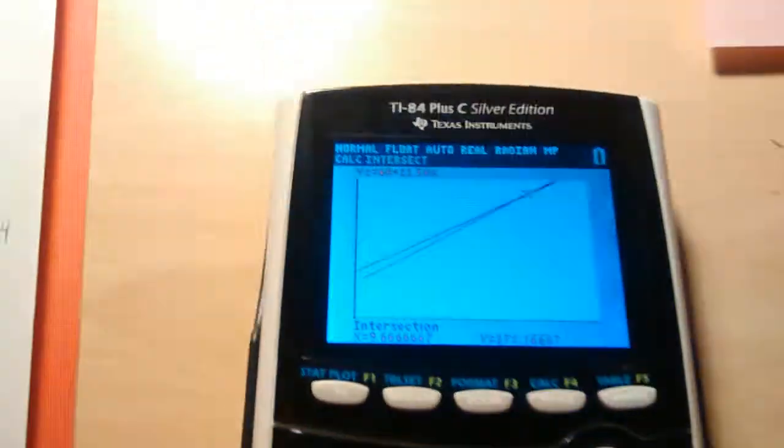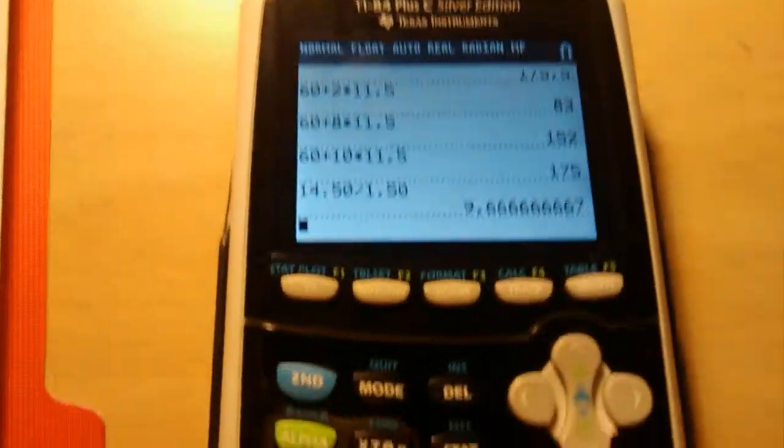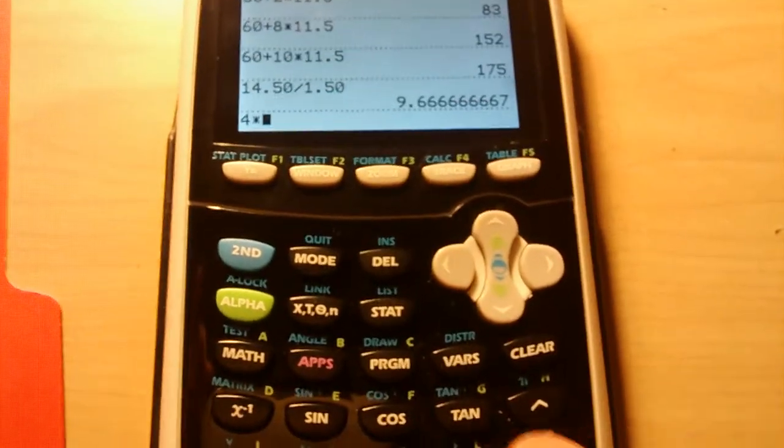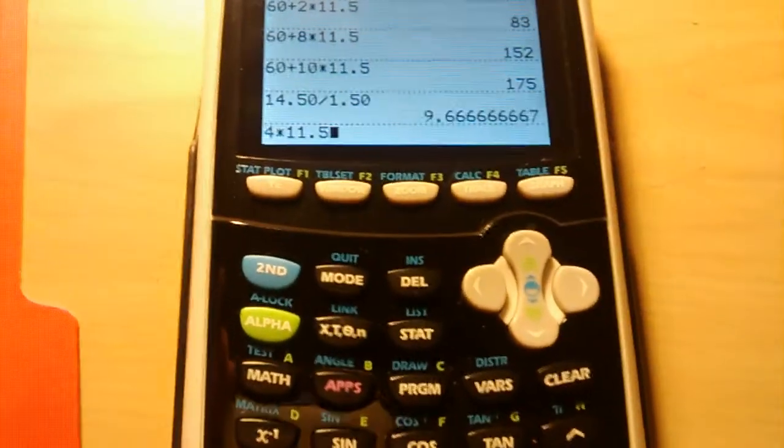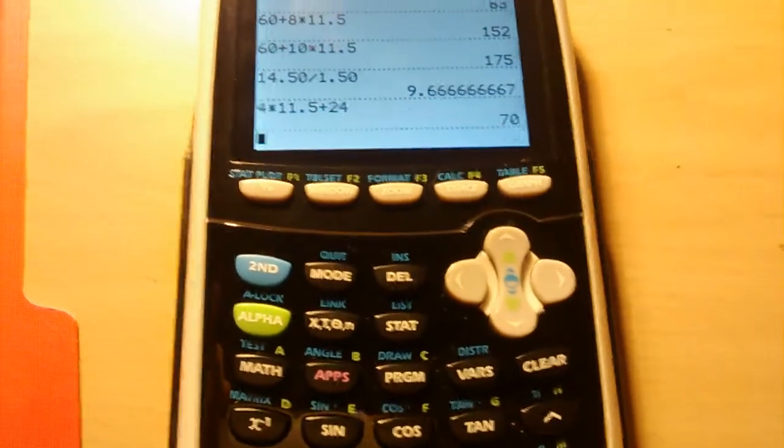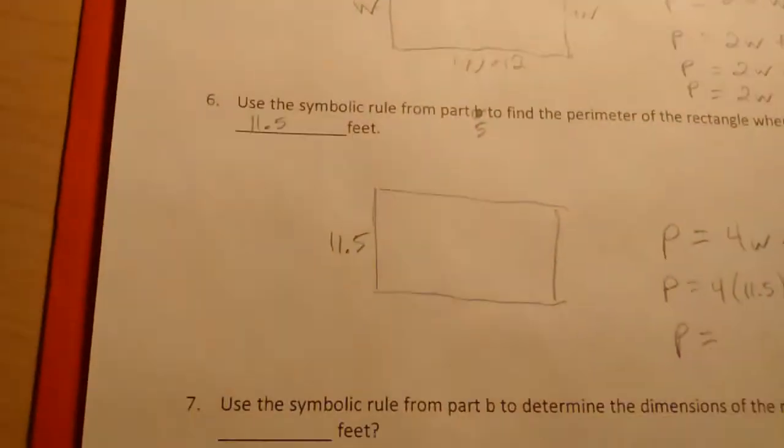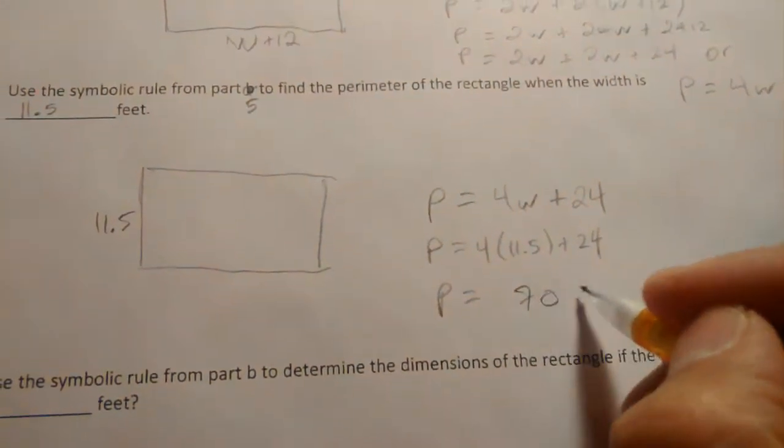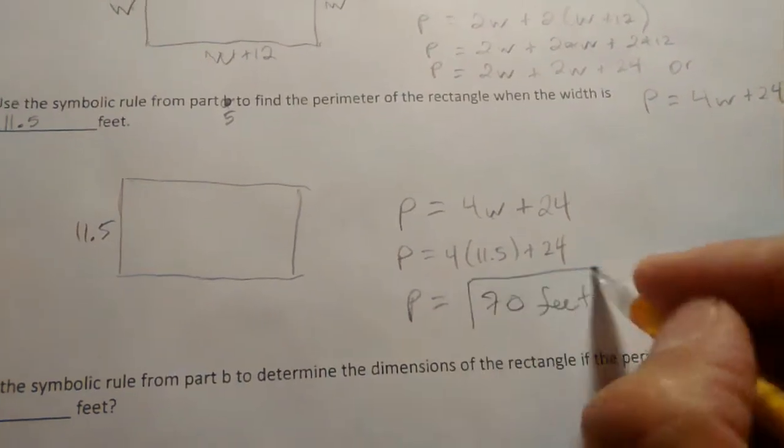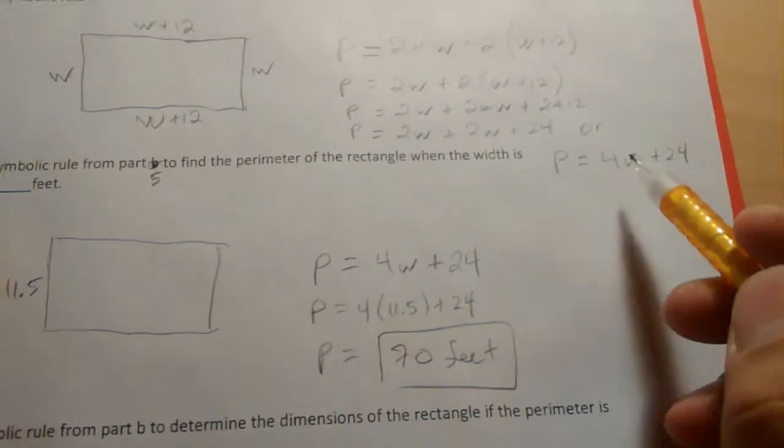That will be my perimeter using the symbolic rule. I'm going to hit second mode or quit, which gets you back to the home screen. So four times 11.5, add 24. That's 70, so 70 feet.